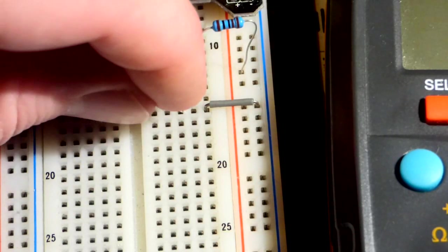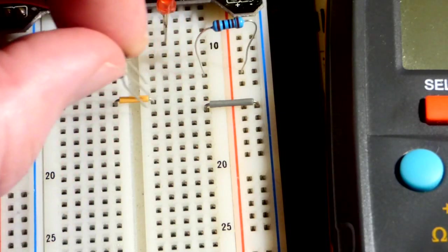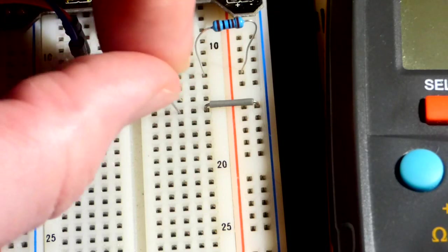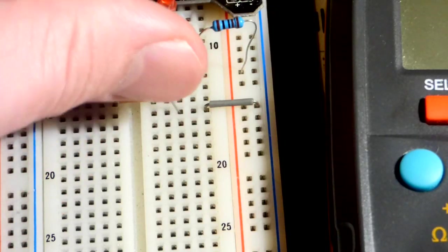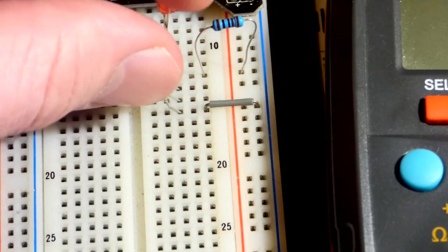So we're going to turn it this way. We're going to put the drain to that gray jumper there. The gate is going to go to this orange jumper, which is floating right now. And then the source is the top pin. It's one row away from this resistor here.